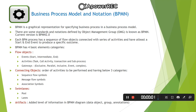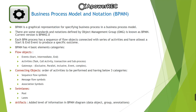The second basic element of BPMN is connecting objects. Flow objects are connected to each other using connecting objects, which are further categorized into three types. Sequence flow symbols are represented with a solid line and an arrowhead. Message flow symbols are represented with dashed lines, an open circle at the start and an open arrowhead at the end. The last is association symbols, represented with a dotted line, used to associate an artifact or text to a flow object.